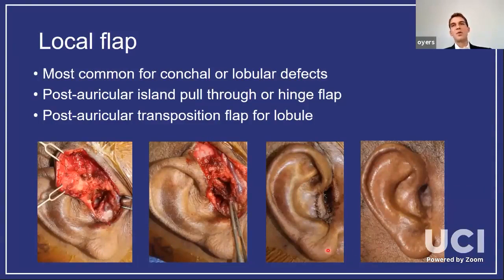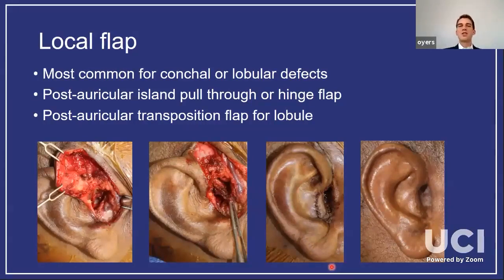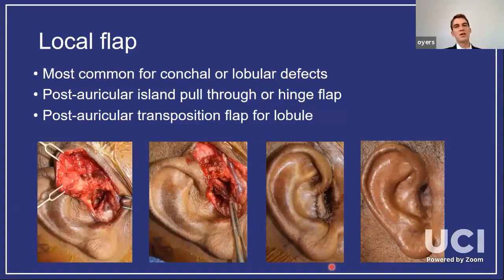If the lobule is missing, you can do a transposition flap from the post-auricular skin to restore soft tissue only. One important point about lobular reconstruction: consider putting in some cartilage even though no cartilage is missing, because if you have just soft tissue it will contract and shrink down. Putting a little cartilage in there helps it keep its shape better.